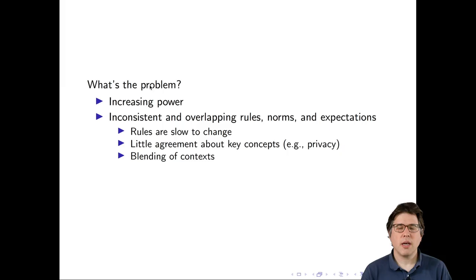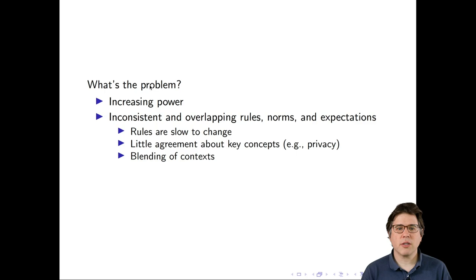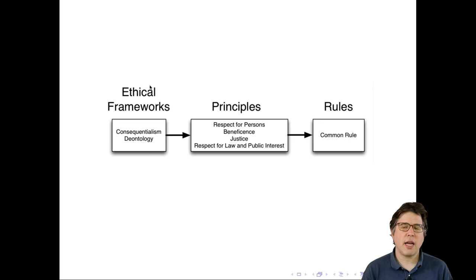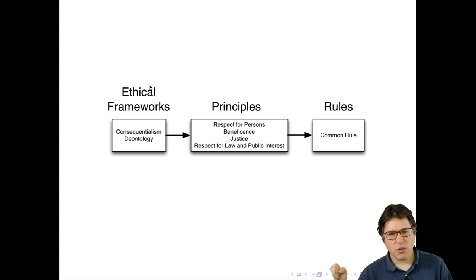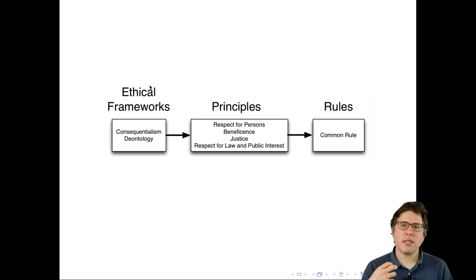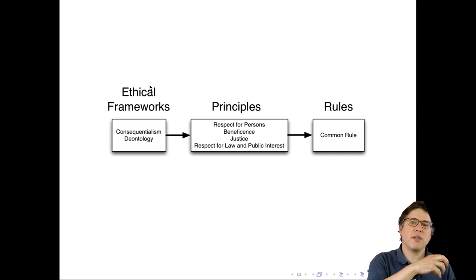So we have increasing power and inconsistent ideas about how that power should be exercised. What I'm going to argue for is a way of thinking about this: rather than focusing on the rules — which is where many social scientists start — I think we're better off abstracting to the principles that were used to derive those rules. These principles are less specific than the rules, which is a good thing because it helps us reason about situations for which rules haven't yet been created. And these principles themselves can be derived from ethical frameworks, which will help us reason about a much wider range of situations and communicate our reasoning with others.